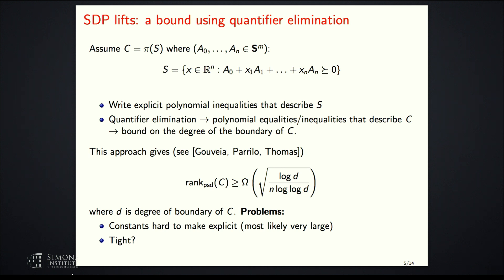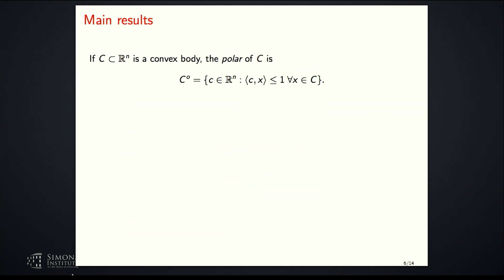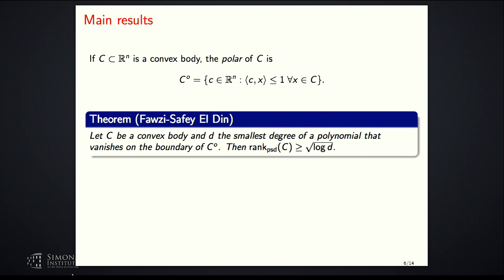The result I want to present today finds a lower bound in the same spirit but with explicit constants, using the notion of the polar of a convex body C. The polar lives in the dual space and is the set of linear functions that attain a maximum of at most one on C. The first result — the lower bound — says: if C is a convex body and D is the smallest degree of a polynomial vanishing on the boundary of the polar, then the PSD rank is at least the square root of log D.